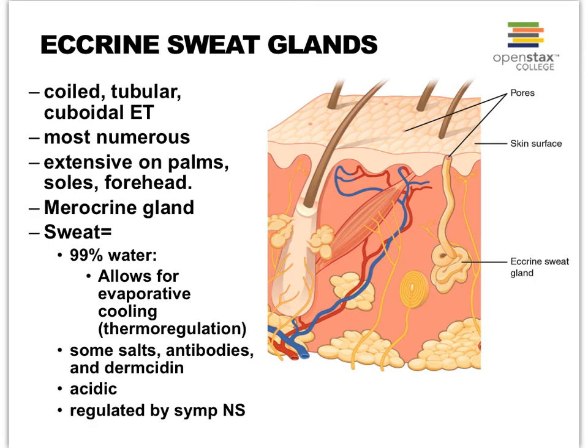Eccrine sweat glands are considered merocrine glands, so now we are talking about modes of secretion. That means that they secrete by means of exocytosis. So the sweat secreted by eccrine glands is secreted by exocytosis.